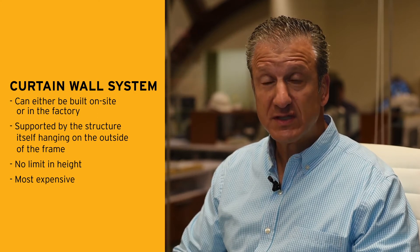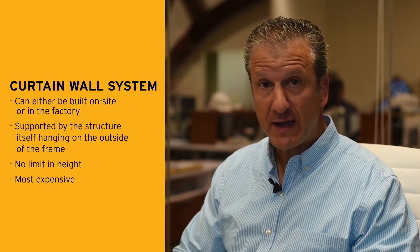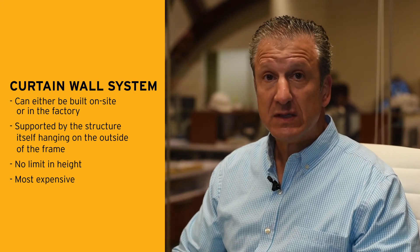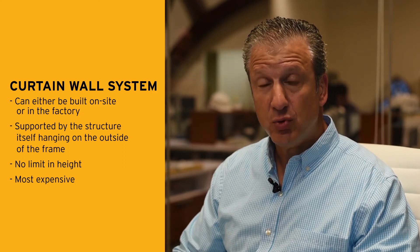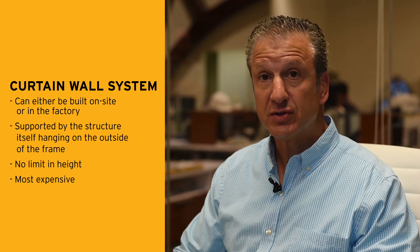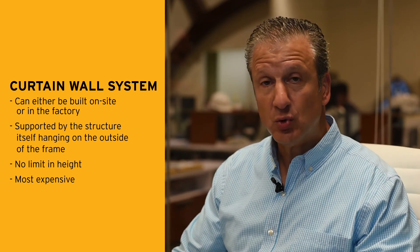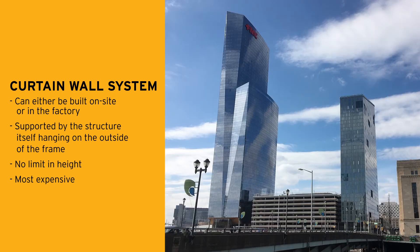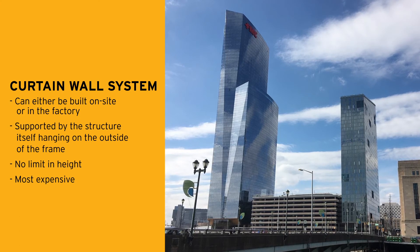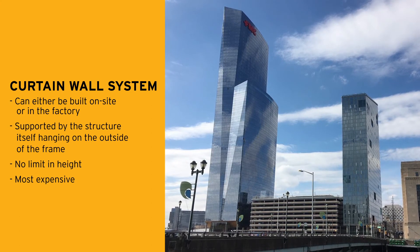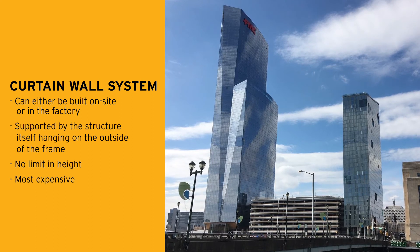The third system is the curtain wall system. Curtain wall systems can be field fabricated — we call that stick-built — or they can be factory assembled, which we call a unitized system. Curtain walls are actually supported by and sit on the structure itself. Unlike the storefront and window wall, which are placed inboard and go from floor to floor or floor to header, curtain walls actually sit outboard of the slab edge and hang on the structure. With that, the curtain wall doesn't have a limitation on its height, as long as there's a structure behind it to support it.